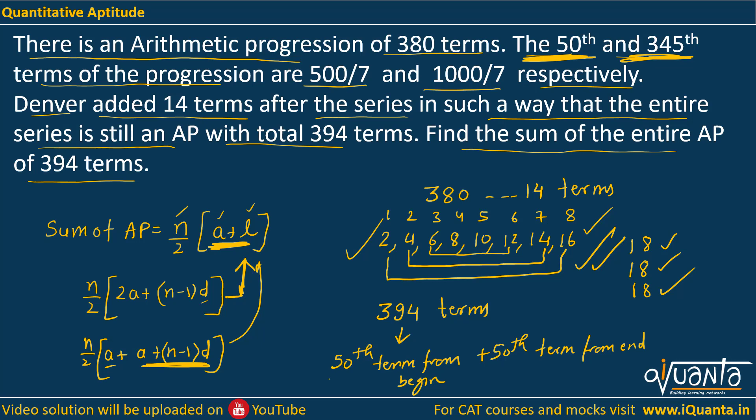Third from beginning, third from last as well. So similarly, if I can find out 50th term from beginning and the sum of 50th term from end, then I will be getting nothing but a plus l only. This is the only point that needs to be understood over here.